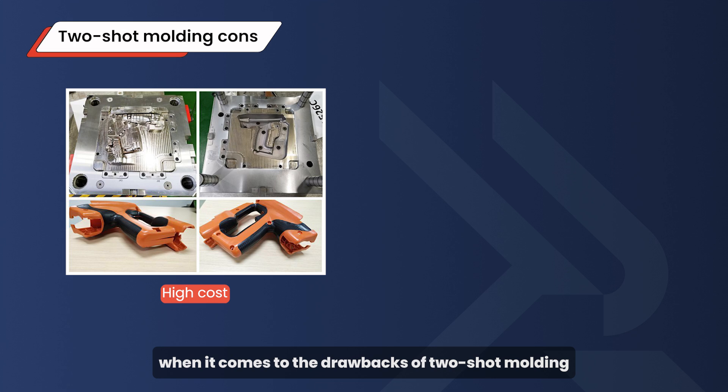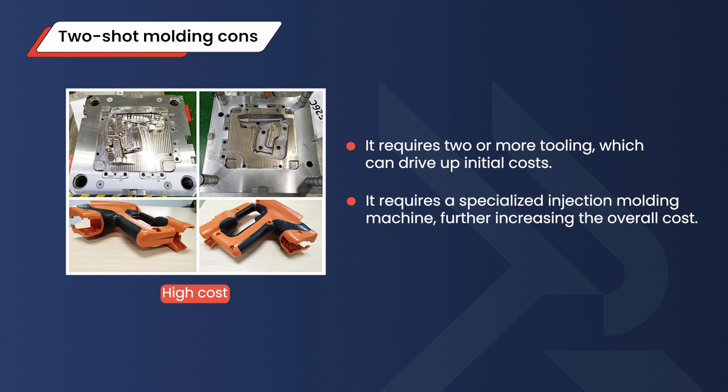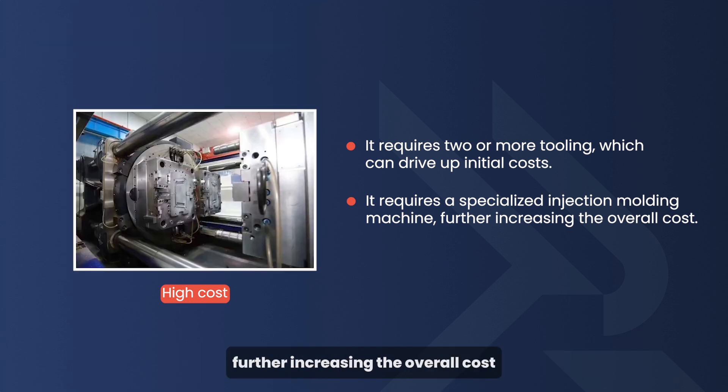When it comes to the drawbacks of two-shot molding, cost is a significant factor. The initial tooling costs for two-shot injection molding can be high because it requires two or more tooling, which can drive up initial costs. Additionally, it requires a specialized injection molding machine, further increasing the overall cost.